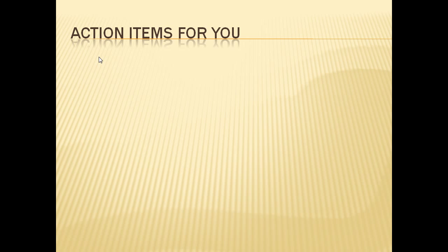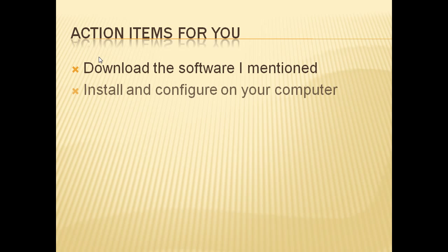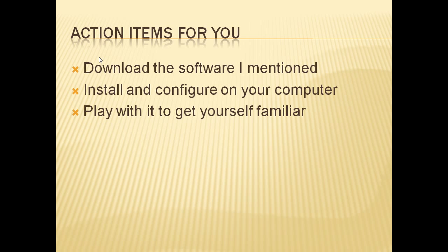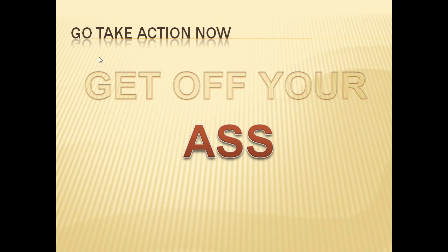Now I have given you a full list of software that you will need to install in your internet cafe. All of it is free, except the operating system, which can also be free if you buy computers with pre-installed OEM Windows. Your action items are: number one, go download, try, and install the software; number two, take it for a spin and experiment with it; number three, build an image of your dream installation. Please take these action items seriously — if you want to make money using your internet cafe, you must follow the main principle: GOYA, meaning get off your ass and take action now.